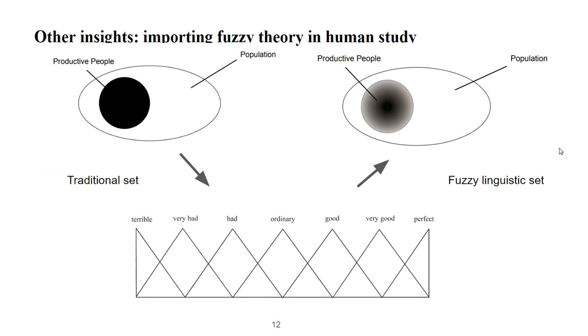Besides, other branches like fuzzy linguistics set can help us quantify the weakness of expression in human study. Certain participants often give an answer like good or not bad to show their feelings. In the left figure, the traditional set considers all productive people are the same. However, this inaccurate degree brings us trouble when we analyze this data.